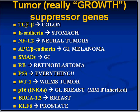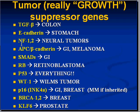Here are some common tumor suppressor genes. Transforming growth factor beta — suppression of the gene coding for that can result in colon cancer. E-cadherin mutation can lead to lack of suppression ultimately expressing itself as carcinoma of the stomach. NF stands for neurofibromatosis — in type one and type two, there's a wide variety of neural tumors resulting from mutated suppressor genes. Adenomatous polyps of the colon slash beta-catenin mutations might give rise to GI cancers or melanomas. SMAD mutations of various types might also wind up being GI cancers.